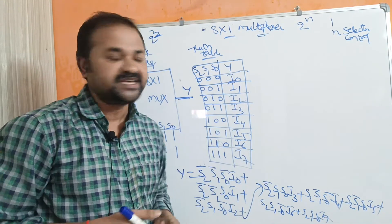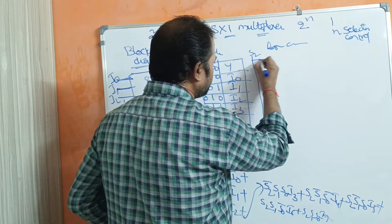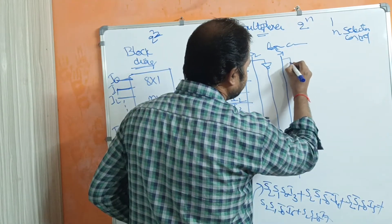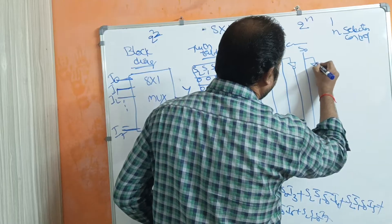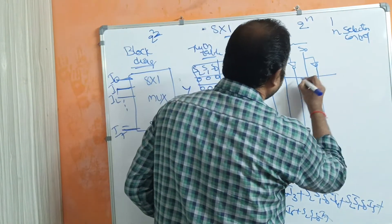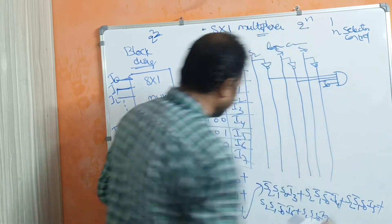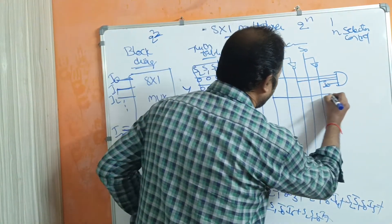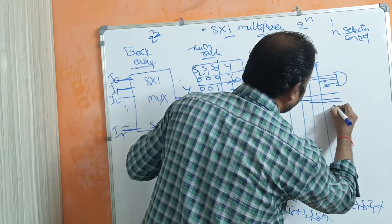Now let us see the logical circuit. We will have three selection lines: S2, S2_bar, S1, S1_bar, S0, and S0_bar. The first AND gate takes S2_bar, S1_bar, S0_bar, and i0. The second AND gate takes S2_bar, S1_bar, S0, and i1.